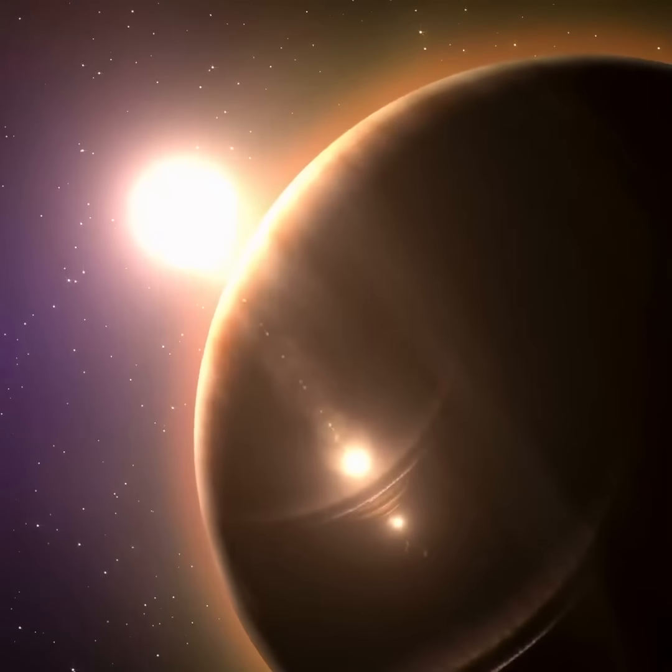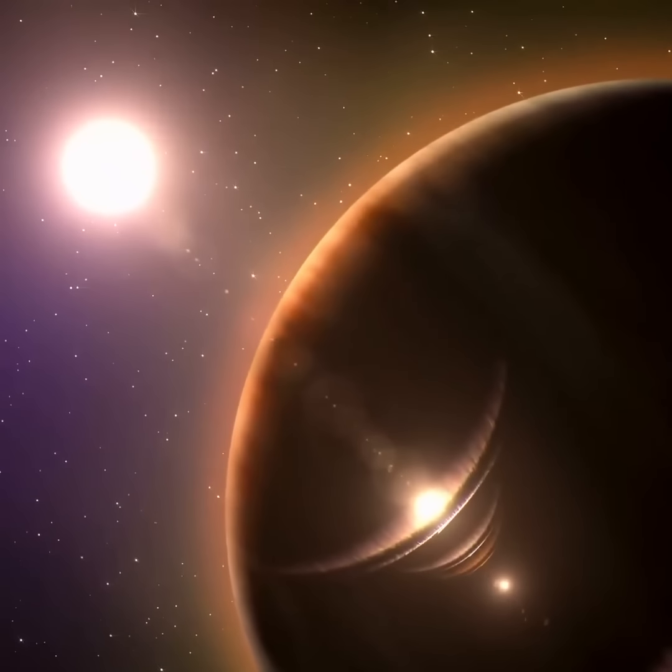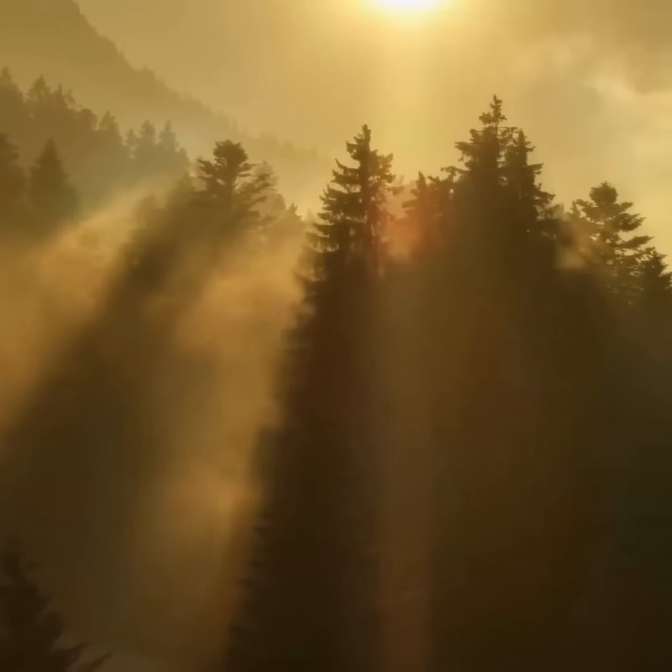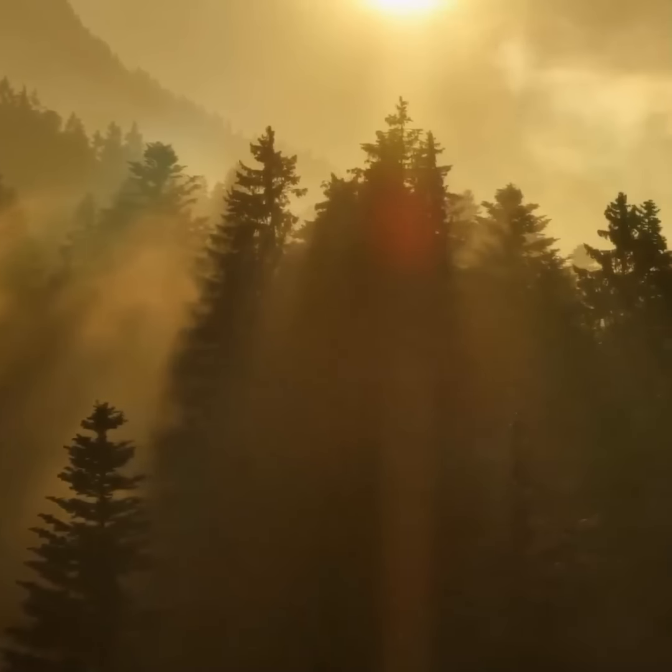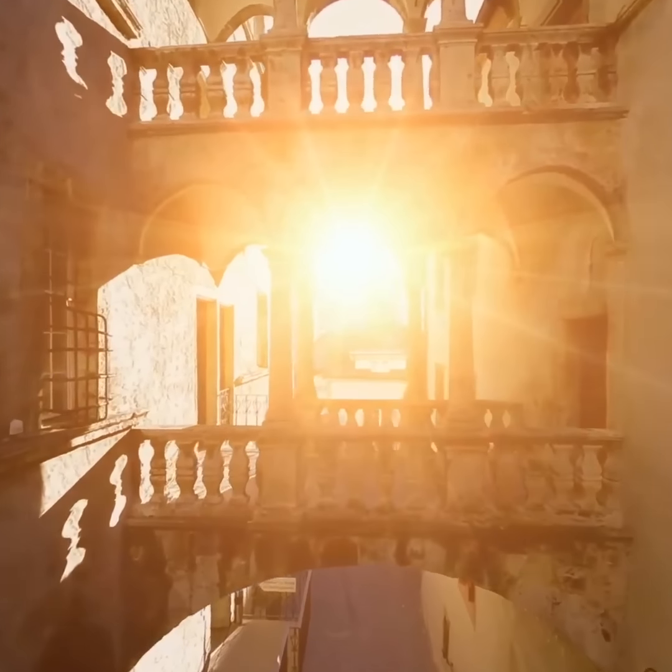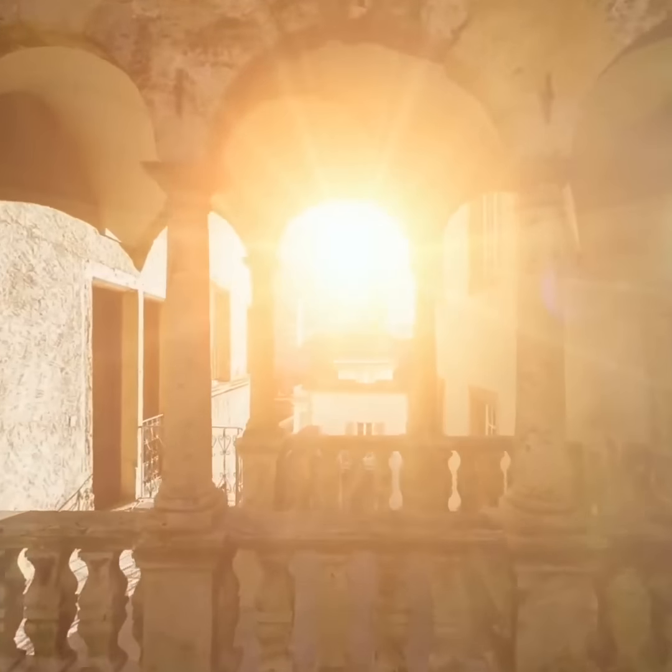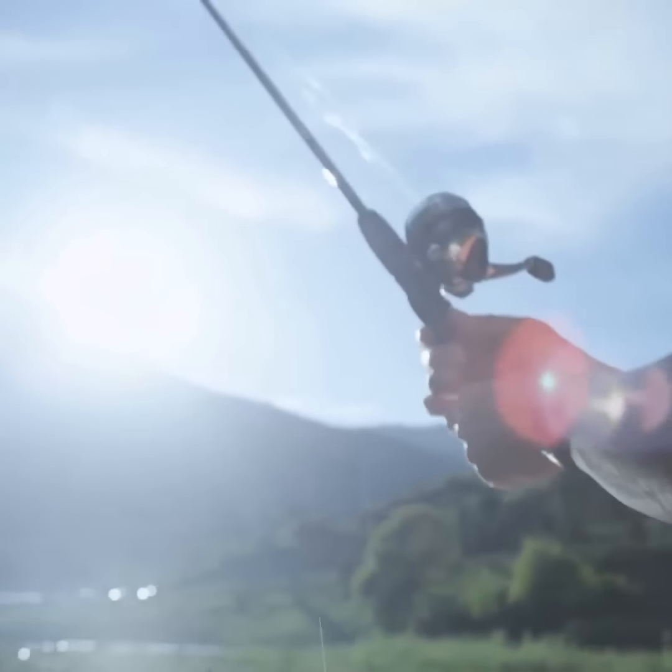Sun dogs often appear as a pair of patches of light with subtle colors at the same altitude over the horizon as the sun. They can have a variety of forms, from colorful spots to patches of light so intense and bright, it looks like there are two additional suns in the sky.